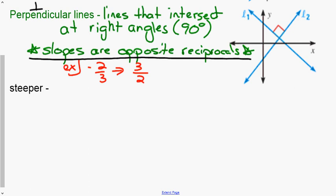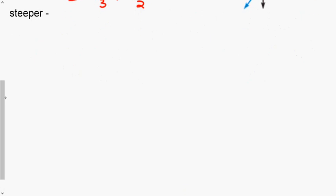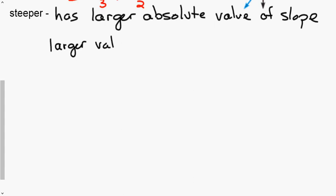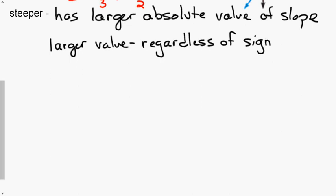Our last term is steeper. When comparing lines, the steeper line has the larger absolute value of slope. The sign — positive or negative — does not affect which line is steeper; we look at the magnitude only.